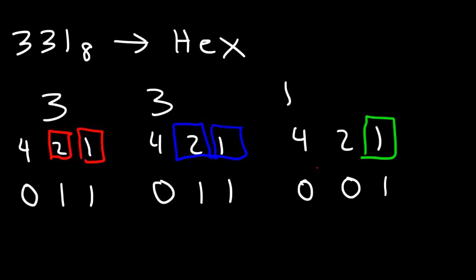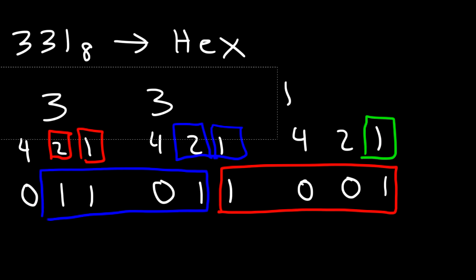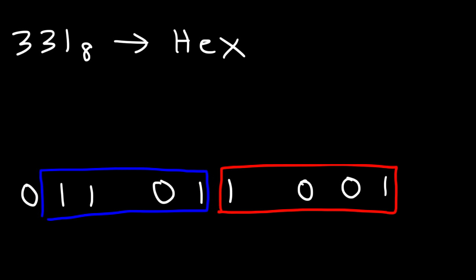So now let's adjust it in groups of 4. Here's the first group of 4, and here is the second group of 4. Rewriting that, we have 1, 1, 0, 1 and then 1, 0, 0, 1.